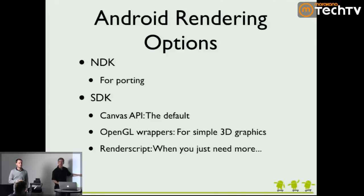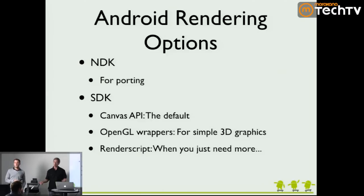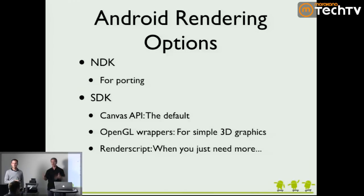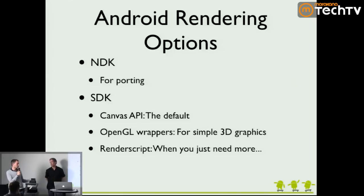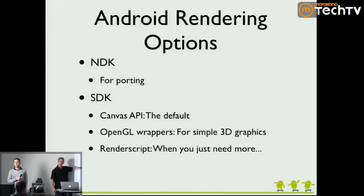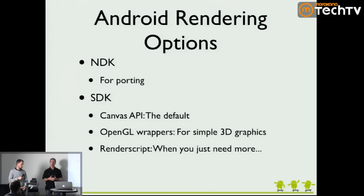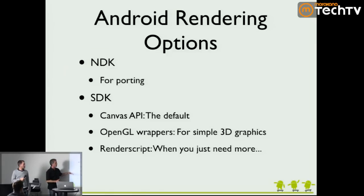On the SDK side you have basically three options. First, there's the Canvas API — the default. If you write a normal SDK application with buttons and list views and a normal view hierarchy, and you have custom rendering, you override the onDraw method and get a canvas object where you call operations like drawText, drawBitmap, or drawLine. With Canvas you can only do 2D. As of Honeycomb it's also hardware accelerated. Prior to 3.0, one reason people looked at NDK or OpenGL was that we weren't hardware accelerated. As of 3.0 we've got GPU acceleration for the graphics, so that stuff is now pretty fast.